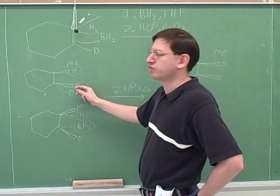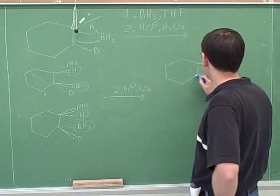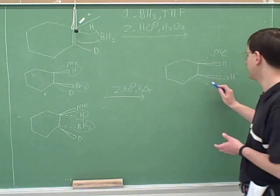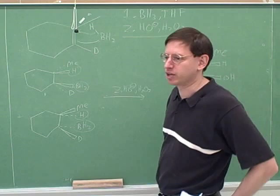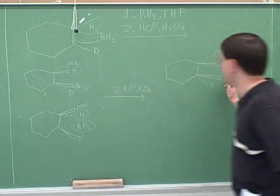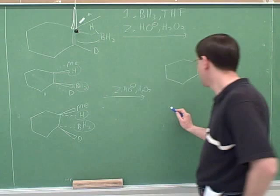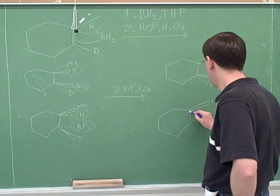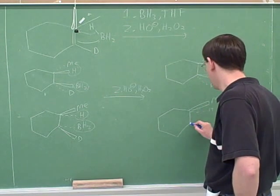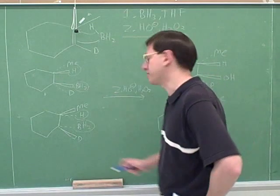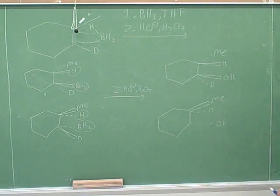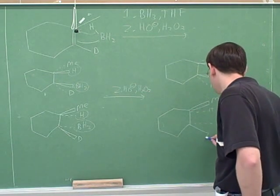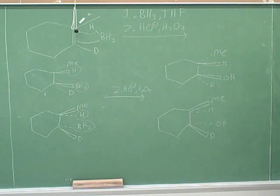So we're going to show the OH replacing the BH2. Now the important thing here is when the OH replaces the BH2, does it invert the configuration or retain the configuration? Retain. We just memorized that. We're not really going to explain it. But since the boron here was on a wedge, this oxygen ends up on a wedge. And here we're replacing the boron a dash with an OH. And again we're doing that with retention of configuration. Why? Because we simply memorized that there's retention of configuration in this step. And that would give us these as our final products.